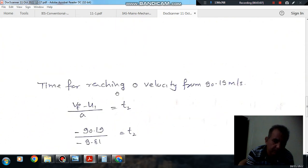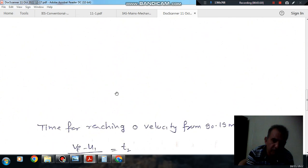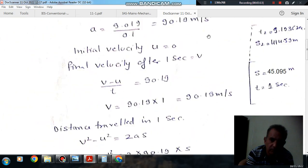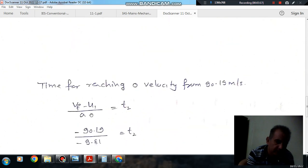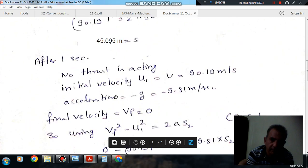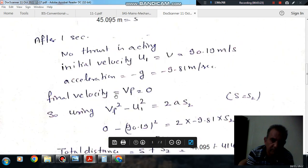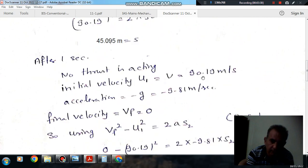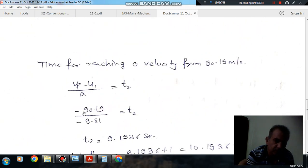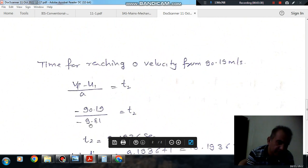The time for reaching zero velocity at the topmost point can be calculated using vf = ui + at2. Here vf = 0, ui = 90.19 m/s, and a = -9.81 m/s². So t2 = 90.19/9.81.